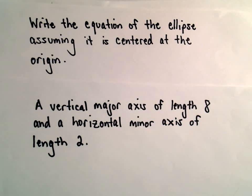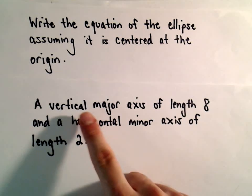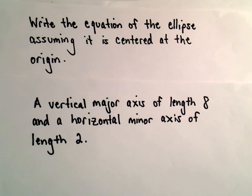All right, in this example we're going to find the equation of an ellipse assuming it's centered at the origin. And we'll also assume that it has a vertical major axis of length 8 and a horizontal minor axis of length 2.